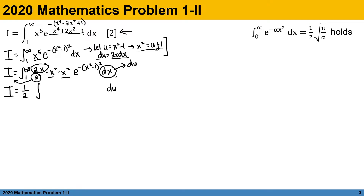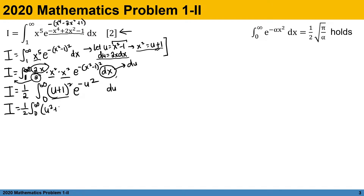Since x squared is u plus 1, we have two groups of u plus 1, giving u plus 1 squared, times exponential of negative u squared. For the limits: when x equals 1, u equals 0, and when x equals infinity, u also equals infinity. We have transformed the integral from x variables into u variables. Expanding the u plus 1 quantity squared, we have I equals one half integral from 0 to positive infinity of u squared plus 2u plus 1 times e to the negative u squared du.